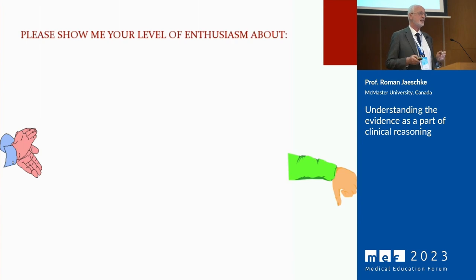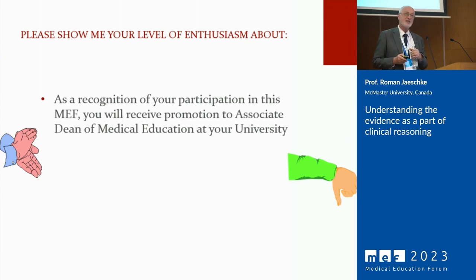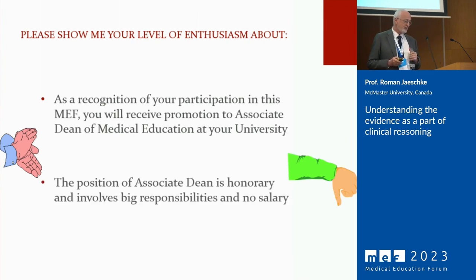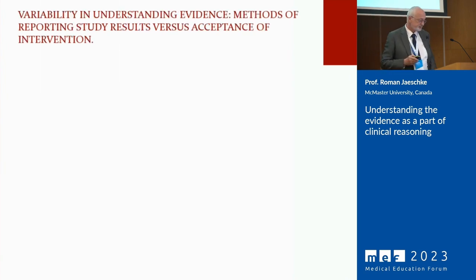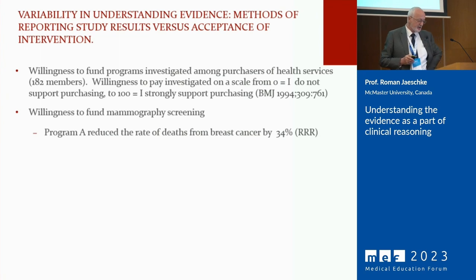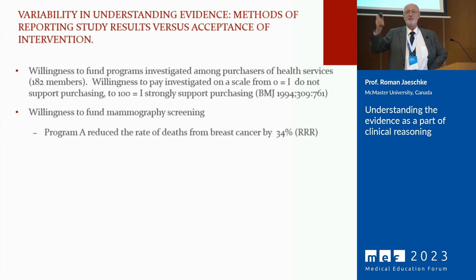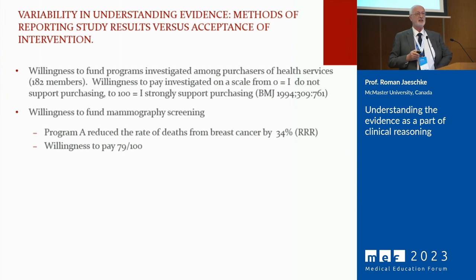The first program: Program A — to reduce the rate of deaths from breast cancer by a third. So two thirds of people still die, but one third will not. The willingness to pay was 79 out of 100 — this program would be bought. The second: Program B — 1,592 women need to be screened yearly for 7 years to prevent one death from breast cancer. Not quite as popular; willingness to pay was lower.